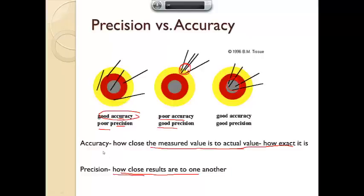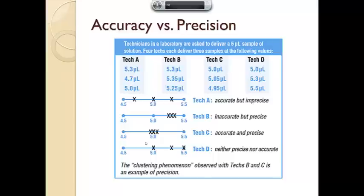So how does this translate over to the lab? Here's four different examples. Four different lab techs were trying to create, trying to measure out five microliters. The very first one, you got one right on, and the other ones are rounded. They're fairly spread apart, so they're imprecise. They're not very precise, but it's somewhat accurate. That's arguable.